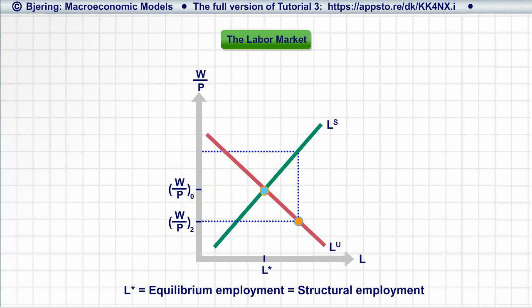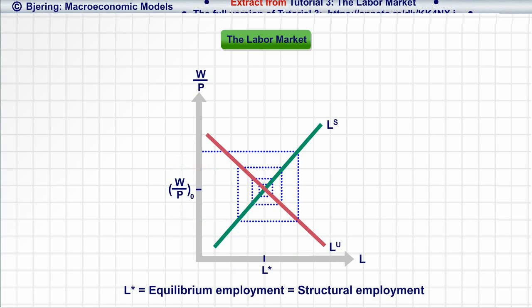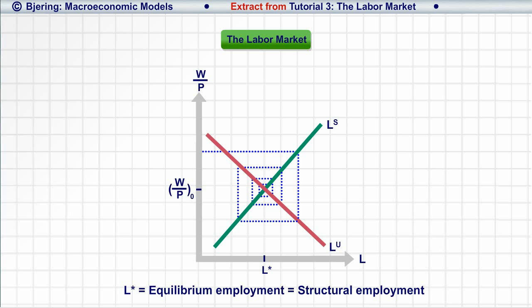Realizing that they will only get paid a real wage of W over P sub-two, labor is only willing to supply L sub-two, a supply of labor so low that firms are willing to pay a real wage of W over P sub-three. And thus, market forces and flexible wages and prices drive the real wage back to W over P sub-zero and employment to L-star, generating labor market equilibrium.